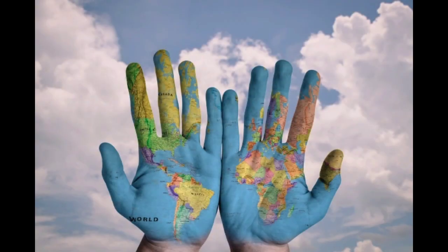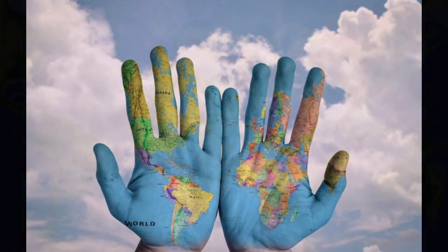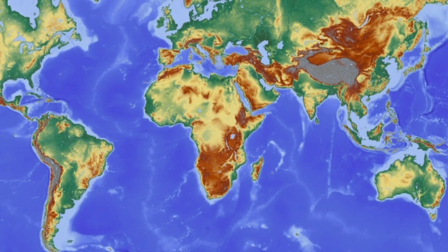A continent is a very large land mass. There are seven continents on Earth. Ordered from largest in area to smallest, they are Asia, Africa, North America, South America, Antarctica, Europe, and Australia.